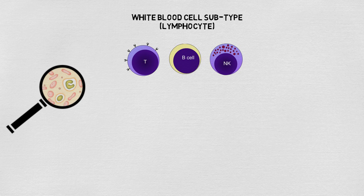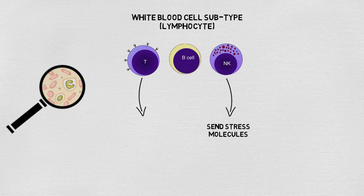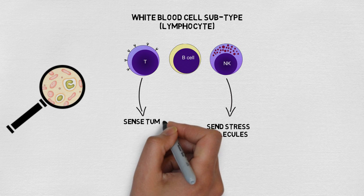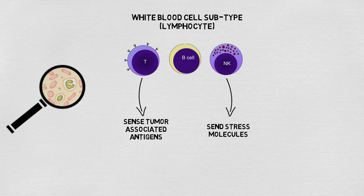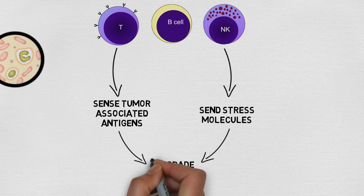Natural killer cells send stress-associated molecules onto damaged and cancerous cells. Dendritic cells activate cytotoxic T cells, which can then sense tumor-associated antigens. Once activated, cytotoxic T cells and natural killer cells release molecules that degrade the tumor cells.